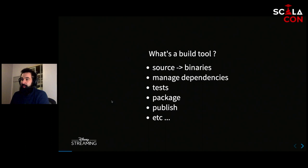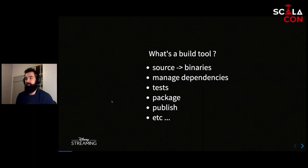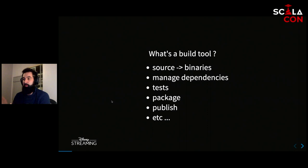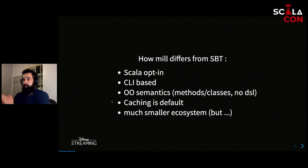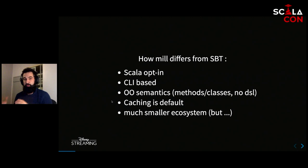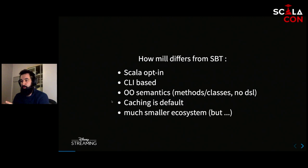In order to define Mill, I have to define what a build tool is. A build tool is a piece of software that aims to facilitate converting source files into binaries or executables. Usually it comes with capabilities to help manage dependencies, test your software, package it into applications, or publish library artifacts. Mill differs from SBT in that it is a general purpose build tool that happens to have Scala building capabilities — it doesn't assume you're going to build Scala code.